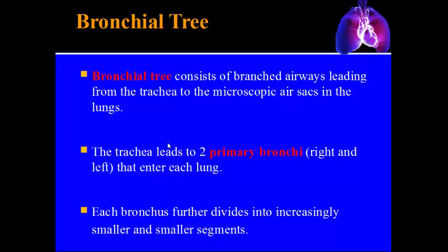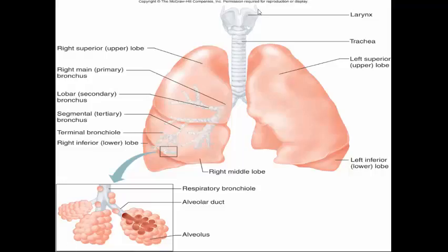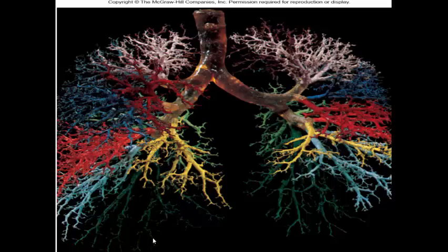The trachea has two main divisions: the right and left primary bronchi, which enter each lung respectively. From there they divide more and more, getting smaller and smaller. The naming goes from primary to secondary to tertiary bronchi and so on. If dye were injected into all the divisions of the bronchial tree, you can see just how detailed and intricate the structure is.